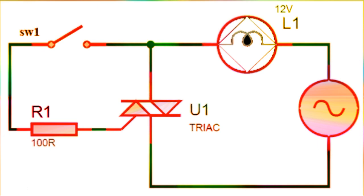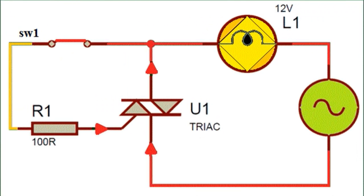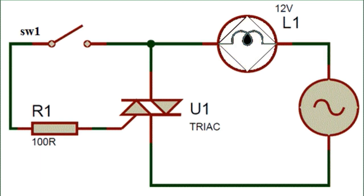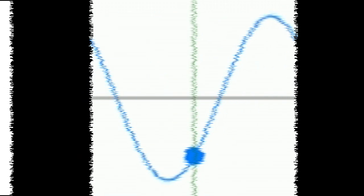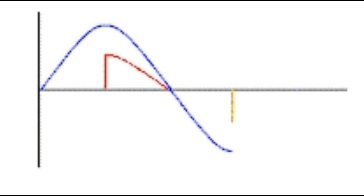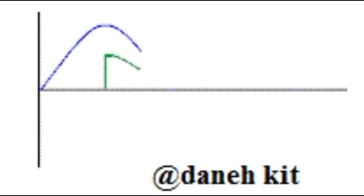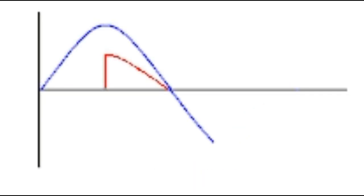This circuit shows a triac used as a simple static AC power switch, providing an on-off function. When SW1 is open, the triac acts like an open circuit and no current flows through the lamp. When SW1 is closed, the gate of the triac is activated by the current-limiting resistor R, and the triac conducts shortly after the start of each half cycle, transferring full power to the load. Current drops to zero at the end of each AC half cycle, but in the next half cycle, as long as the switch remains closed, current is conducted using the opposite thyristor. This type of control is generally called full wave control because both half waves are controlled.